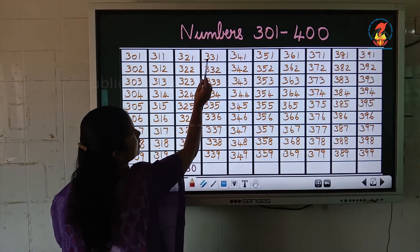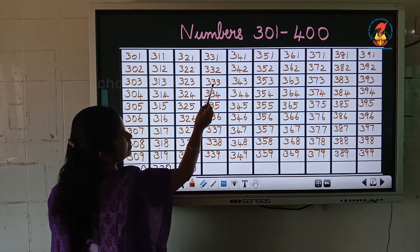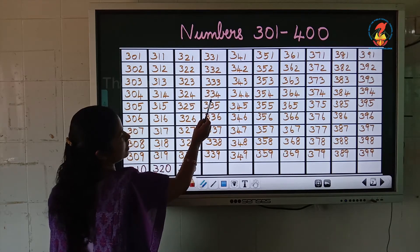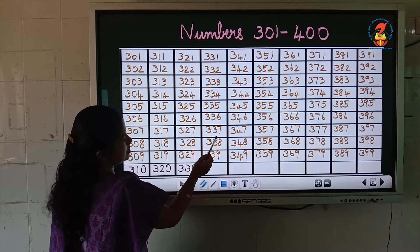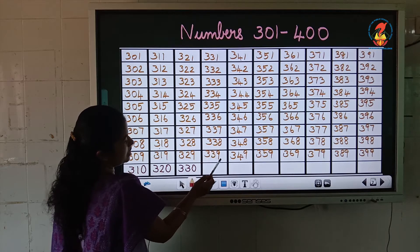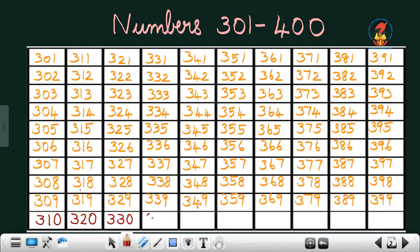After 330, 331, 332, 333, 334, 335, 336, 337, 338, 339, then 340.